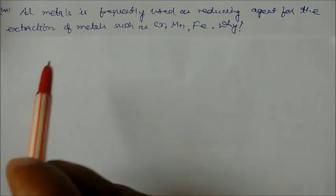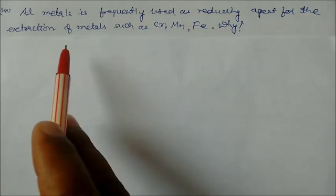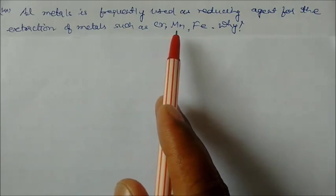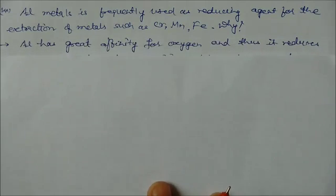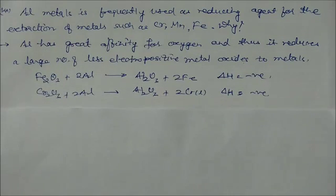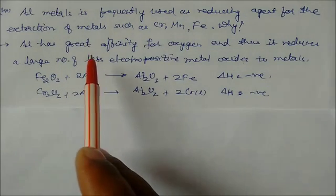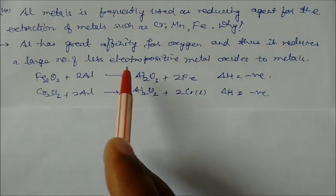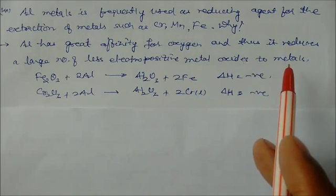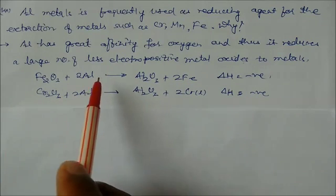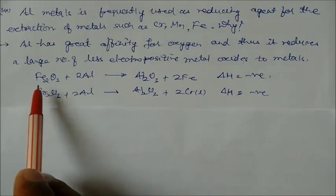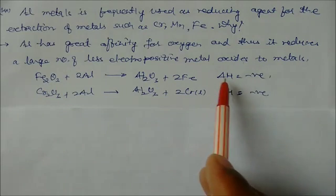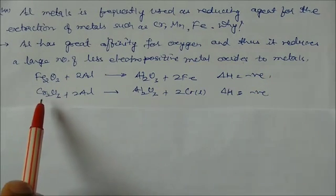Aluminum is frequently used as a reducing agent for extraction of metals such as chromium, manganese, and iron. Aluminum has a great affinity for oxygen and thus reduces a large number of less electropositive metal oxides to metals. For example, Al reacts with Fe2O3 producing a large amount of heat.